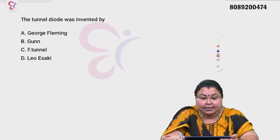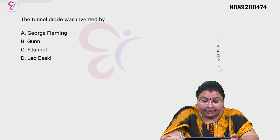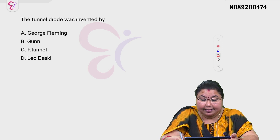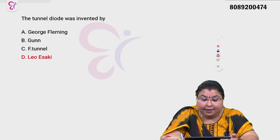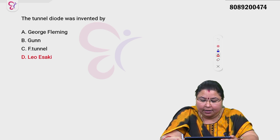The tunneling diode was invented by Leo Esaki. The correct answer is Option D — Leo Esaki.